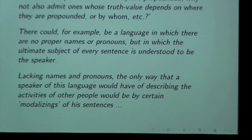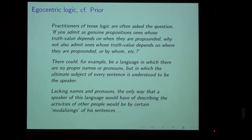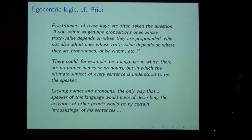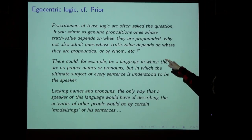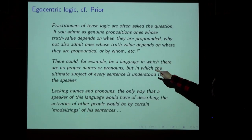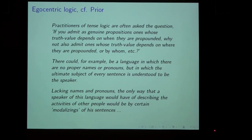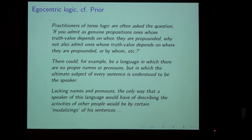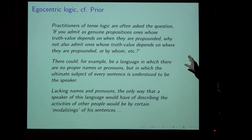Here are a couple of citations from Prior. In the first citation, Prior says that practitioners of modal logic are often asked the question: if you omit a general proposition — one whose truth value depends on when it is propounded — why not also omit those whose truth value depends on where they are propounded or by whom? So in more contemporary terminology, we have to do with a Kripke model here.